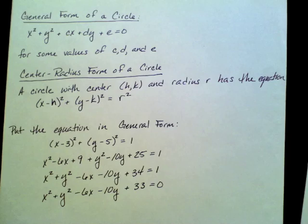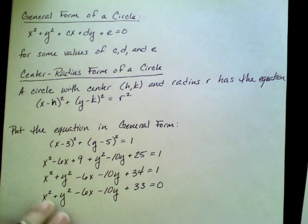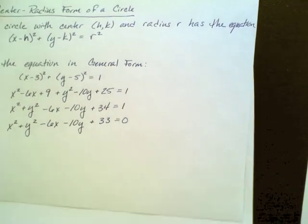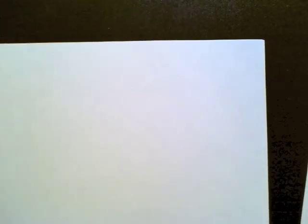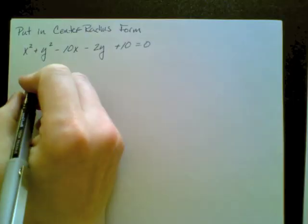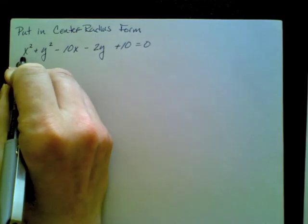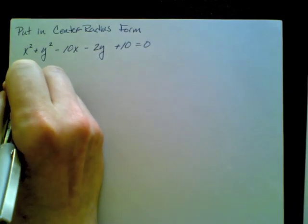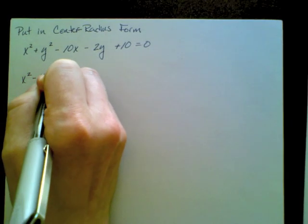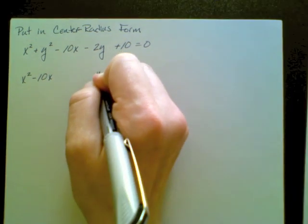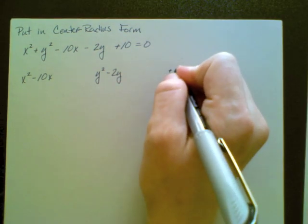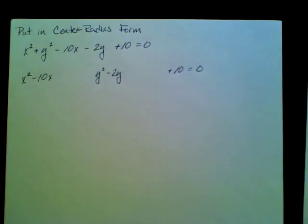Now, more often we'll want to go backwards. We'll start with general form and want to get it in the more useful center-radius form. So let's have an equation that does that. The first thing I'm going to do is group all of my x terms together, whatever power of x. I have an x squared and an x term, I'm going to put them together first. I'll leave myself some empty space, and then I'll have the constant hanging out at the end.